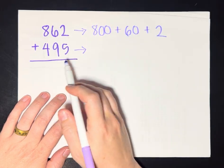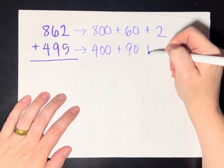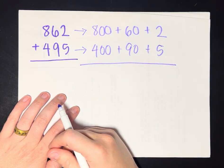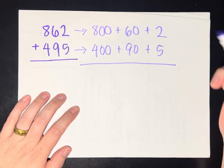And we're going to rewrite our 495 as 400, and then 90, and then 5. And what we're going to do is then just add each of these place values. I can start on either side. Maybe I'll start over here with the ones.